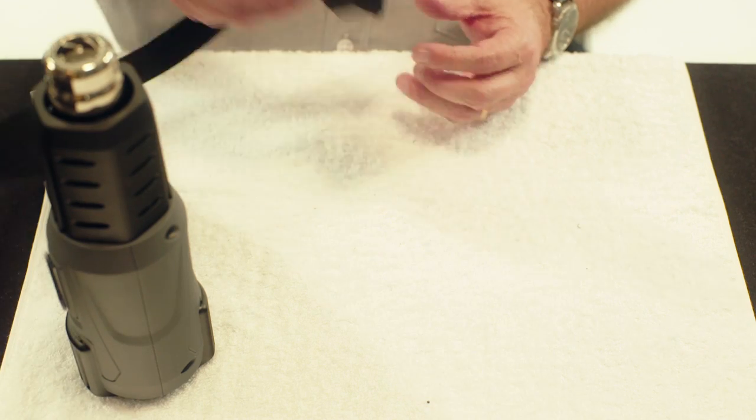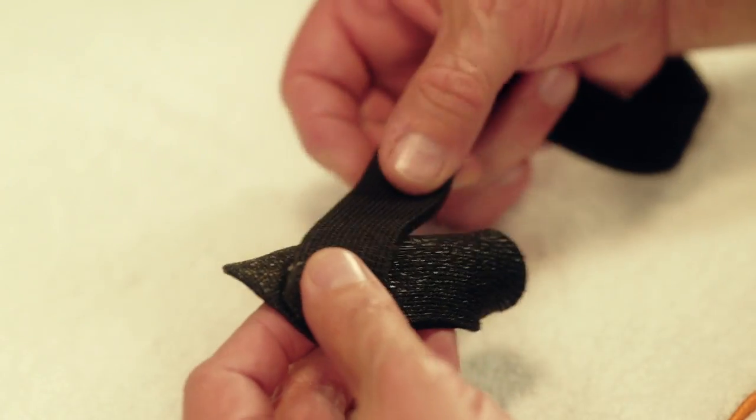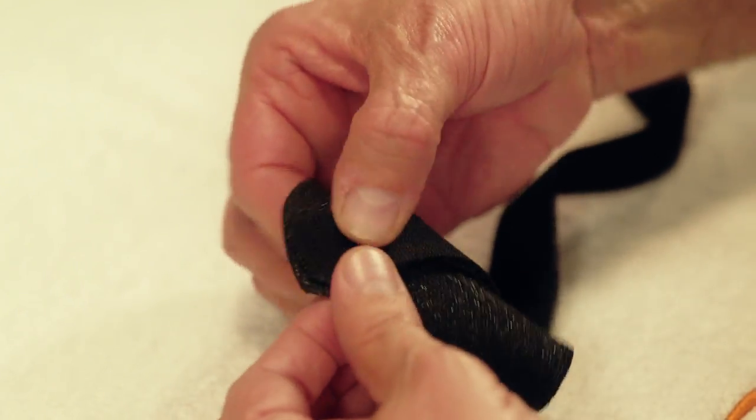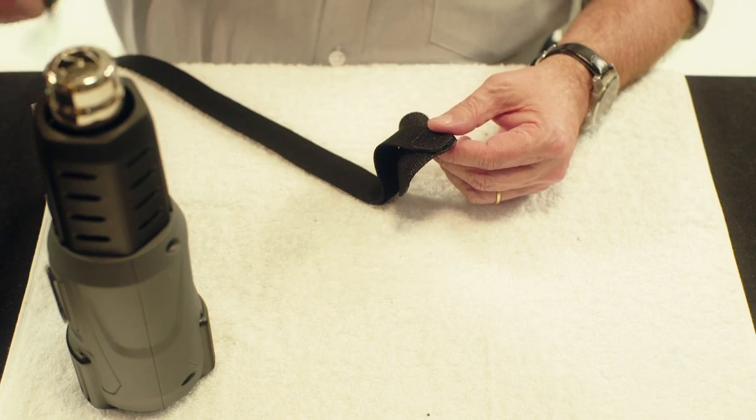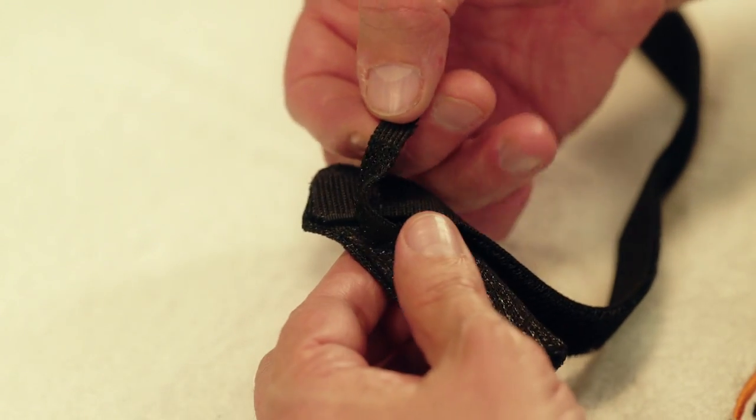Heat the dorsal side of the orthosis with a heat gun and diagonally stick the Velcro loop with the loop side down onto the orthosis. Heat a small piece of Orphicast with the heat gun and secure the Velcro to the orthosis.